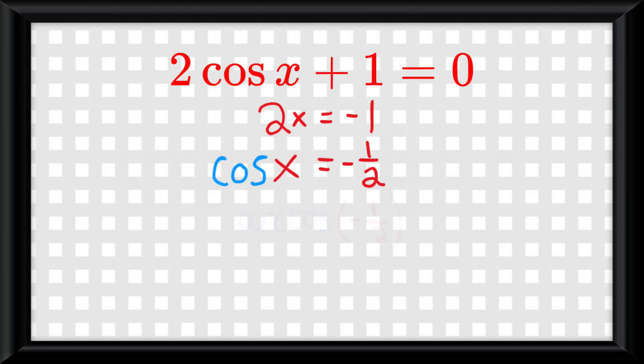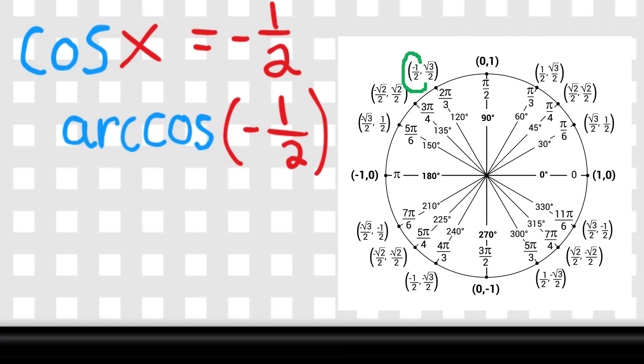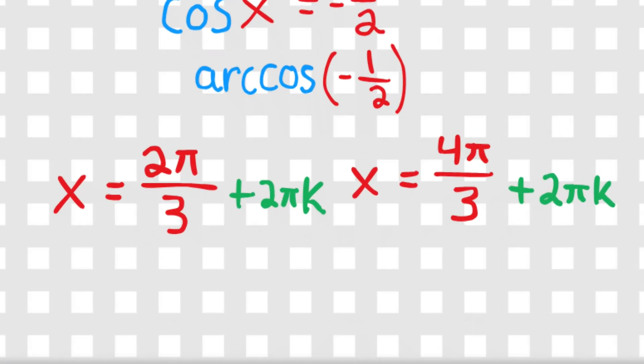That would be the same thing as saying arc cosine of negative 1 over 2, which looking at our unit circle it's at 2π over 3 and 4π over 3. And since we don't have any domain for the problem we need to slap the plus 2πk on it, and then this is our fully simplified answer.